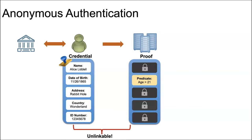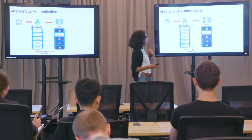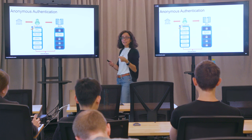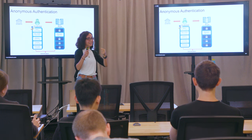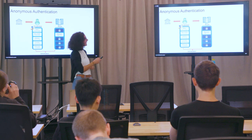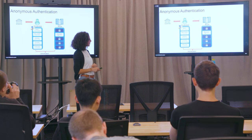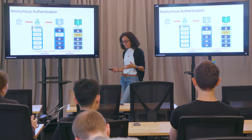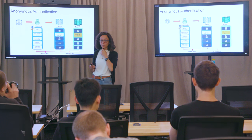This proof presented to the verifier should be unlinkable to the original credential obtained in the first step. Even if the issuing authority colludes with the verifier, they shouldn't be able to link that credential with that proof. A user should be able to create multiple proofs on their credential, potentially on different predicates, and those proofs should remain unlinkable to each other and to the original credential.